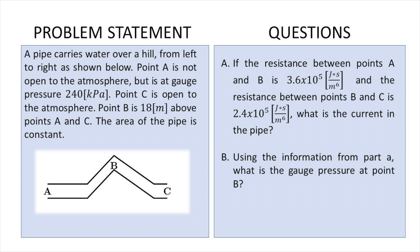So the problem that we're going to solve goes as follows. A pipe carries water over a hill from left to right as shown below. Point A is not open to the atmosphere but is at a gauge pressure of 240 kilopascals. Point C is open to the atmosphere. Point B is 18 meters above points A and C.